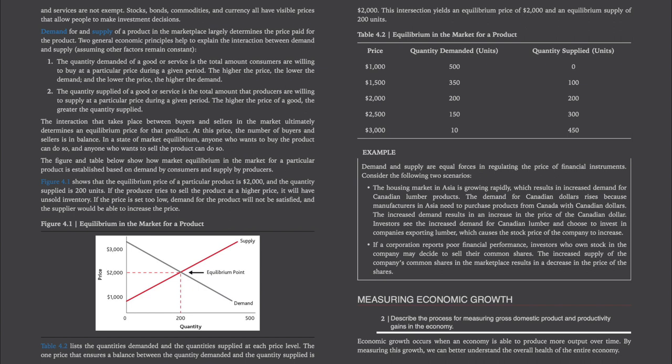The interaction that takes place between buyers and sellers in the market ultimately determines an equilibrium price for the product. At this price, the number of buyers and sellers is in balance. In a state of market equilibrium, anyone who wants to buy the product can do so, and anyone who wants to sell the product can do so. Figure 4-1 shows that the equilibrium price of a particular product is $2,000, and the quantity supplied is 200 units. If the producer tries to sell the product at a higher price, it will have unsold inventory. If the price is set too low, demand for the product will not be satisfied, and the supplier will be able to increase the price.